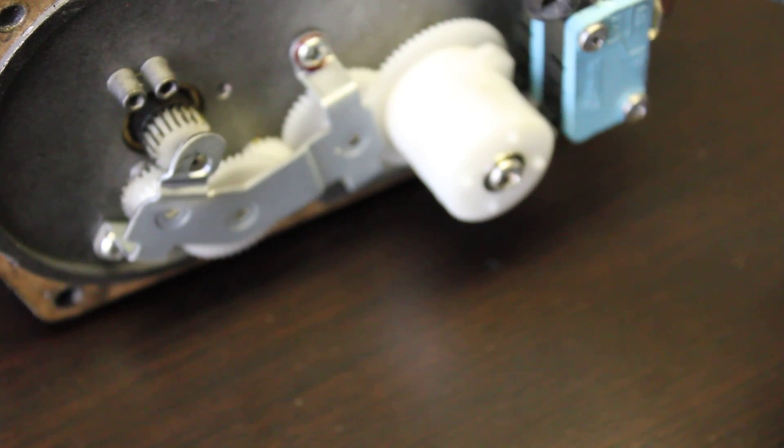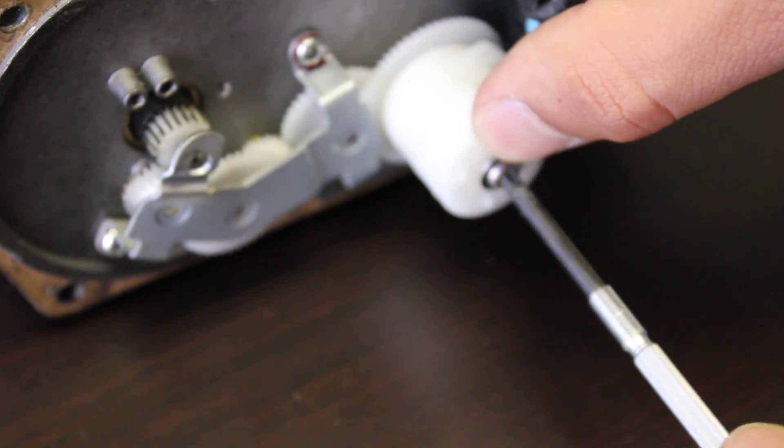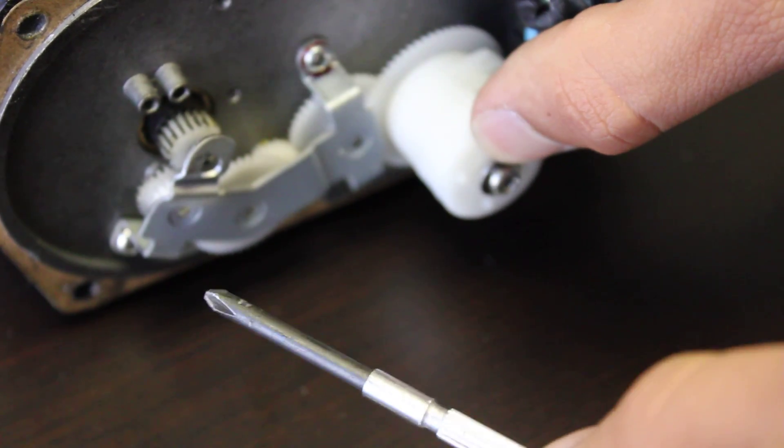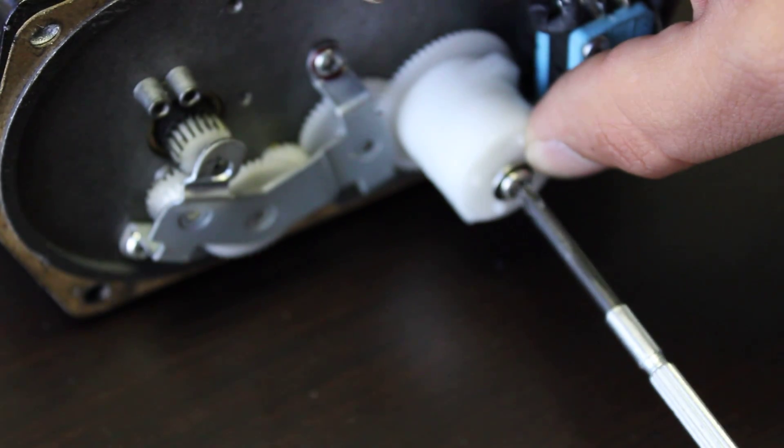So if you want to change the location of the limit switch, all you would do is unscrew here. You want to make sure, depending on which one you want to change, you hold down the other one so you don't mess up that position. You pull it out, adjust it, push it back in, and then re-screw it back in.